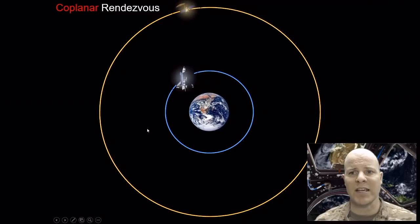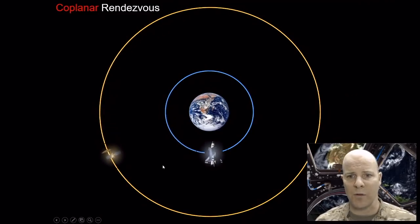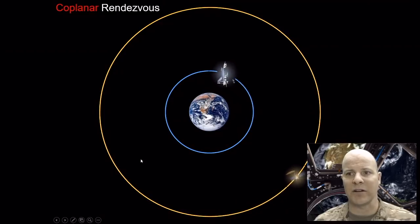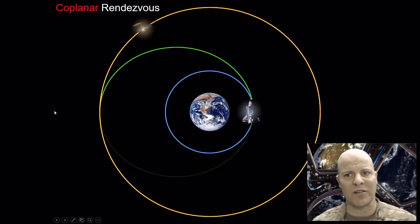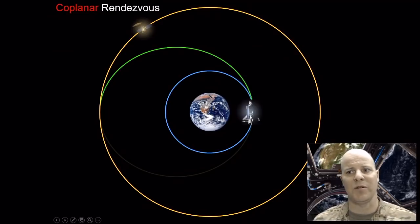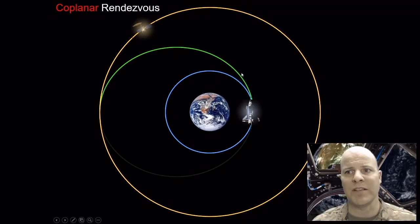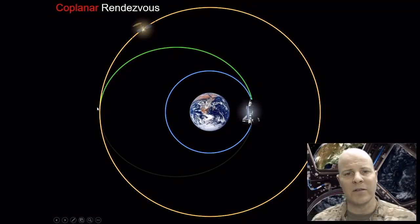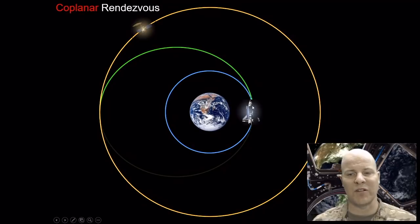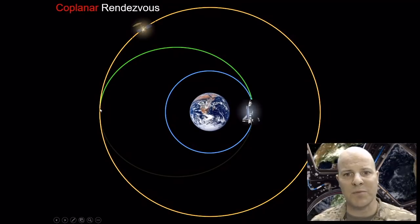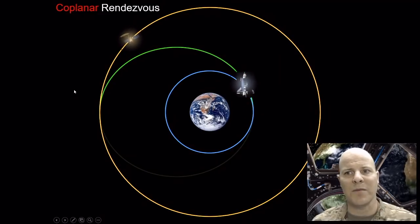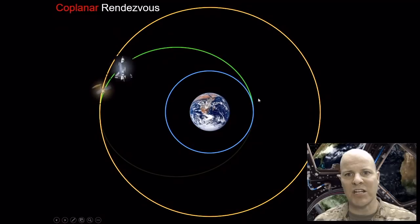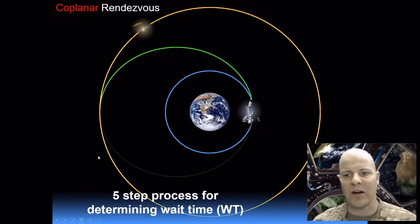We're going to have two spacecraft. The interceptor spacecraft is going to be on the interior orbit and the target spacecraft is going to be on the exterior orbit. The maneuver is going to look very similar to a Hohmann transfer — we burn once to jump onto a transfer orbit and come all the way out to point B. The key difference is we have to time this burn such that when we arrive at point B, the target spacecraft is actually there as well. We call the amount of time we have to wait before initiating this burn our wait time.